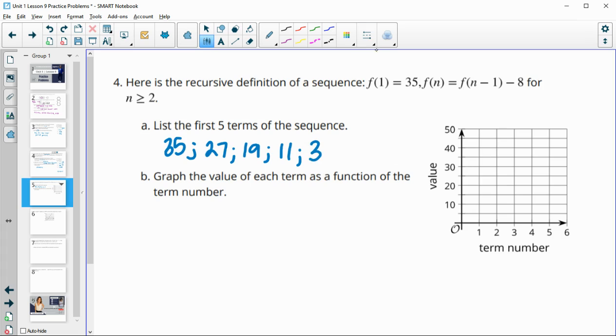Now let's graph it. So we're going to go to 1 is at 35. Term 2 is at 27, so here's 25, so between 25 and 30. 3 is at 19, so almost 20. 4 is at 11, so just over 10. And then 5 is at 3, so just below 5. And then we can see it's arithmetic, subtracting 8, so we get that straight line.